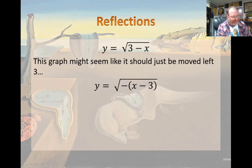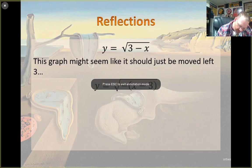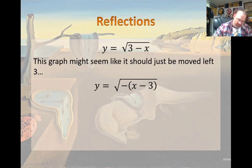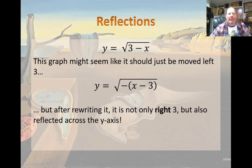So I'm still maintaining the same signs that I had before. I still have a negative x and a positive 3. But now you can see that it doesn't actually move left 3, it moves right 3 spots.